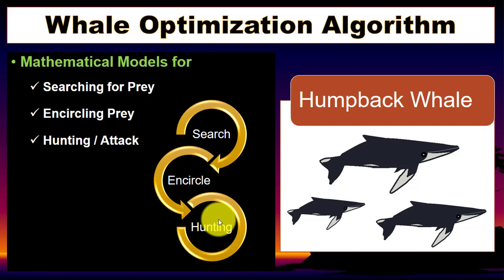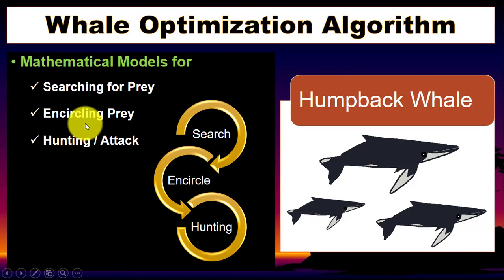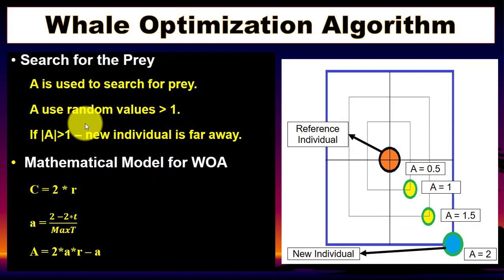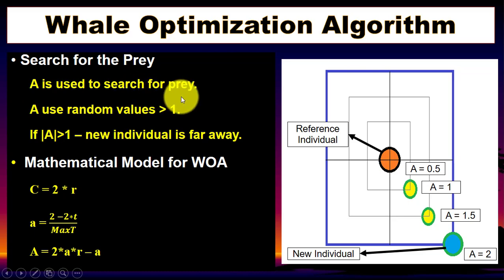We use different mathematical models to represent the behavior of the humpback whale. First, we have a mathematical model to search for the prey. For searching, we use coefficient vector A and assign a random value to it. We use this vector to search for the prey. The random value is assigned, and then we check if this value is greater than 1 or not.